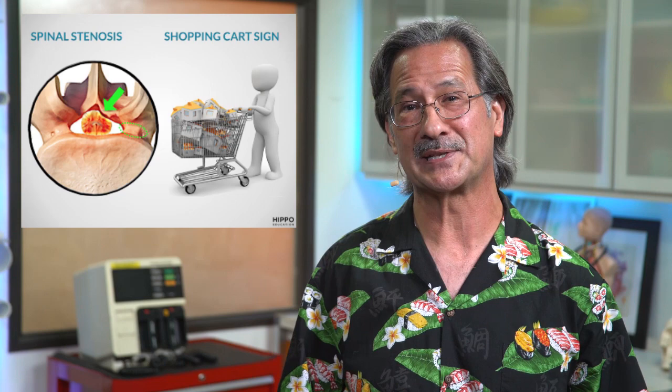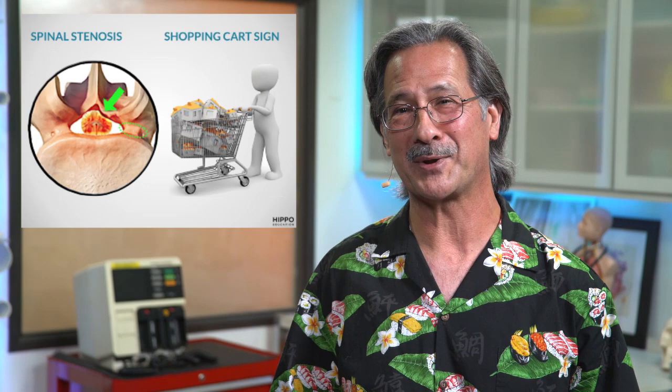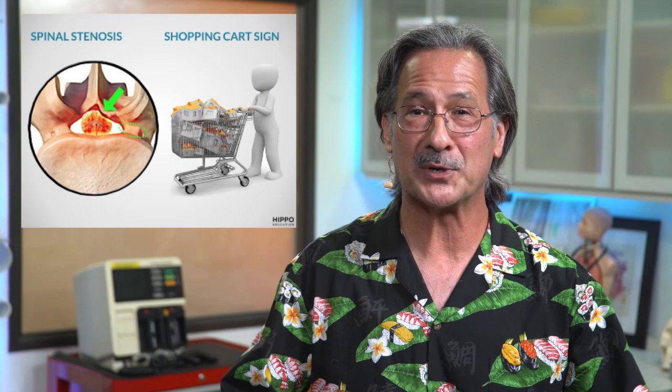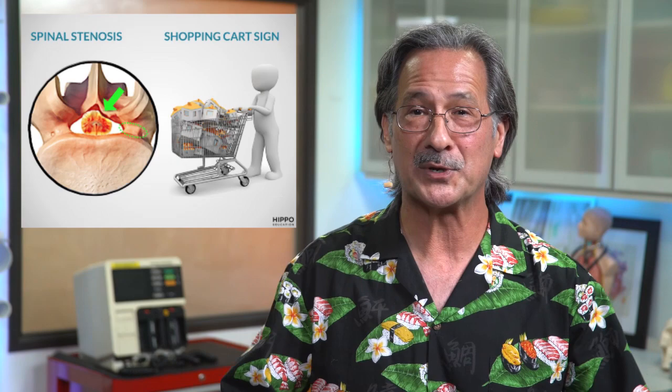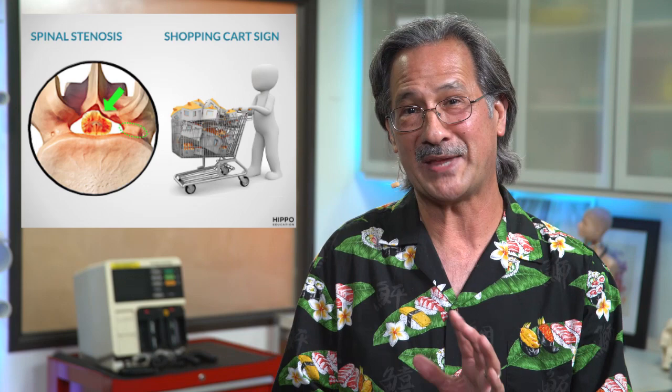The last thing we see in this diagram is the shopping cart sign. This figure really doesn't give the shopping cart sign justice. What we typically see is not the person standing straight, but rather the person is hunched over their shopping cart a little bit. That hunching over provides for that flexion, which gives the pain relief in that particular circumstance. When you see that, it's classic with neurogenic claudication.